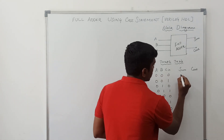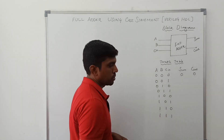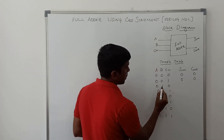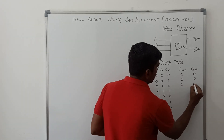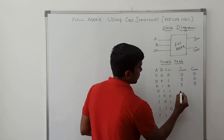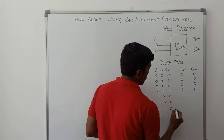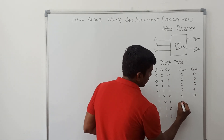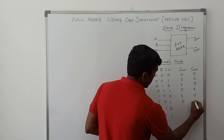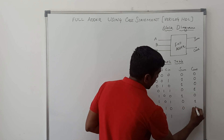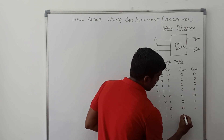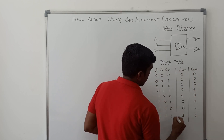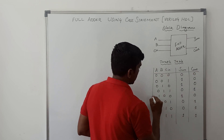When all 3 variables are 0, Sum is 0 and carry out is 0. For 001, Sum is 1 and carry is 0. For 010, Sum is 1 and carry is 0. For 011, Sum is 0 and carry is 1. For 100, Sum is 1 and carry is 0. For 101, Sum is 0 and carry is 1. For 110, Sum is 0 and carry is 1. For 111, both Sum and carry are 1. This is the truth table of the full adder circuit.